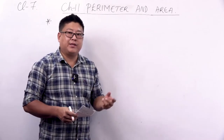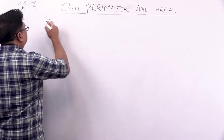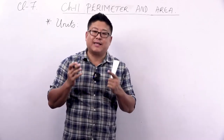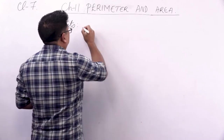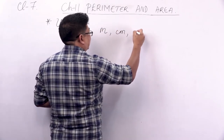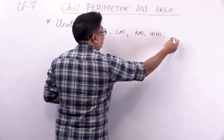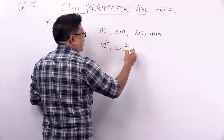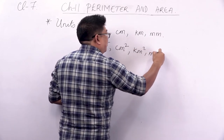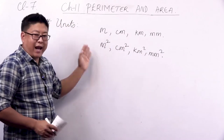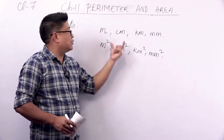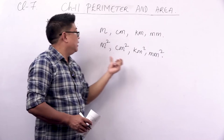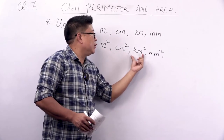Let's continue with the units. For perimeter, the units are centimeter, meter, kilometer, or millimeter. For area, you have meter square, centimeter square, kilometer square, or millimeter square. Depending on what unit you are using — for area it will be square units, and for perimeter it will simply be meters, centimeters, kilometers, or millimeters.